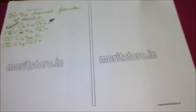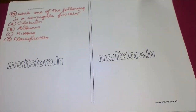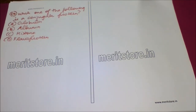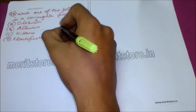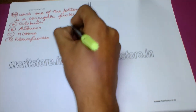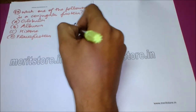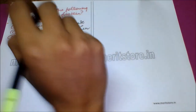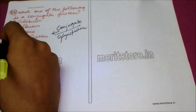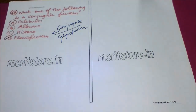Which one of the following is a conjugate protein? Option A: globulin, Option B: albumin, Option C: histone, and Option D: glycoprotein. When a protein adjoins with carbohydrates, it is known as a conjugate protein or a glycoprotein. Glycoprotein is one such type of protein, and thus the answer to this question is Option D: glycoprotein.